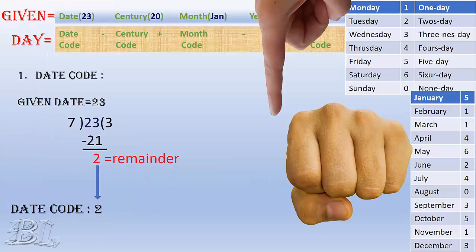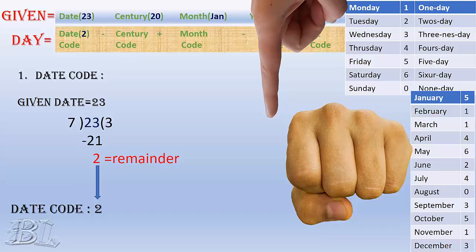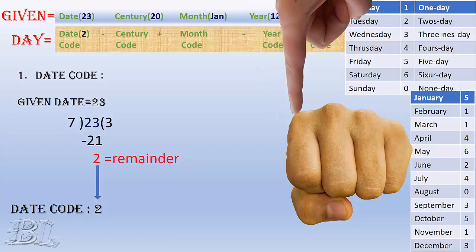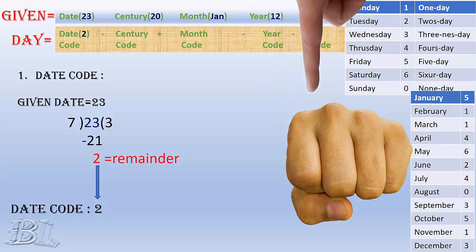Let's begin. The given date is 23; we divide it by 7 and find the remainder to be 2, which will be the date code. So we move two steps ahead in the fist with our index finger, as shown.